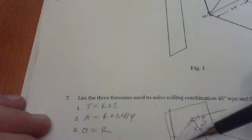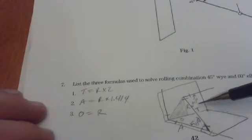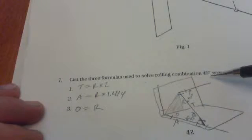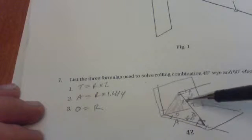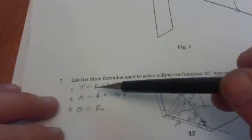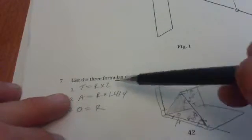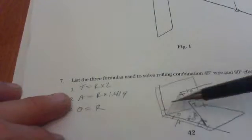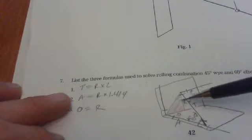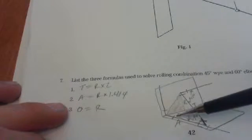Moving on to number 7, they asked for some formulas. And I drew the picture straight out of the book just to kind of help me out, knowing where these letters come from. And this is when you're solving for a rolling combination, 45 degree Y and 60 degree elbow offset. So, T equals R times 2. There's T, so 2 times that equals that. A equals R times 1.414. And O equals R. There they are.